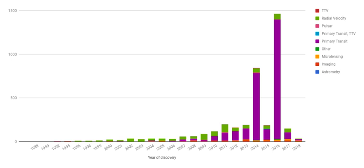The Kepler satellite served the Kepler mission between March 7, 2009 and May 11, 2013, where it observed one part of the sky in search of transiting planets within 115 square degrees around the Cygnus, Lyra, and Draco constellations. After that, the satellite continued operating until November 15, 2018, this time changing its field along the ecliptic to a new area roughly every 75 days due to reaction wheel failure.